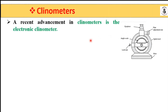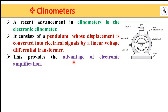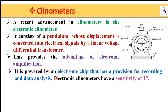The recent advancement in clinometers is the electronic clinometer, which is highly sensitive and saves time during measurements. In the case of the electronic clinometer, it consists of a pendulum whose displacement is converted into electrical signals by a linear voltage differential transformer (LVDT). This provides the advantages of electronic amplification as well as increasing the sensitivity of the instrument. It is powered by electronic chips that have provisions for recording data analysis. Electronic clinometers have a sensitivity of one arc minute.